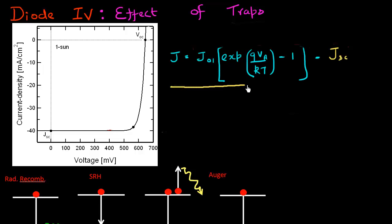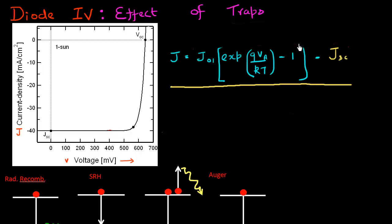Shown here is the JV relationship for an ideal diode, also plotted in this chart. This axis plots the current density as a function of voltage. When there is no applied voltage — VA equal to zero — this first term in the equation goes to zero, and you get a current which is equal to the short circuit current.